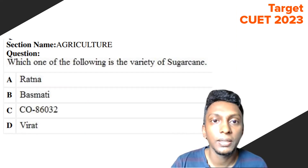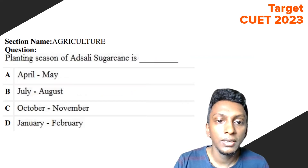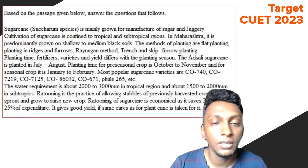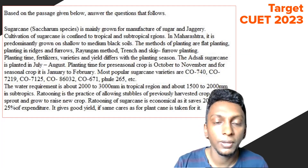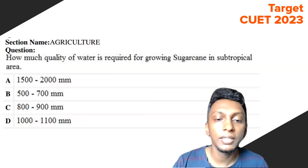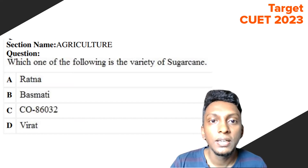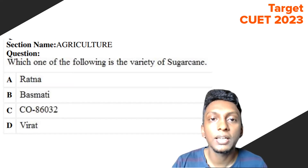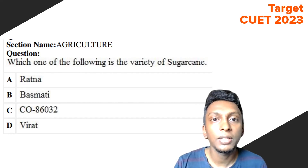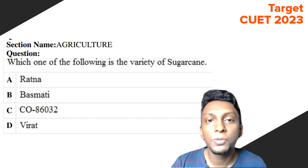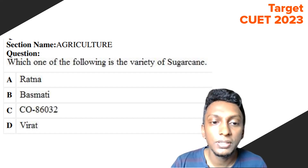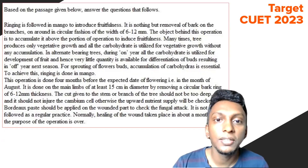Question 5: Which one of the following is NOT a variety of sugarcane? We can see there is a CO series: CO740, CO219, CO7125, CO86032, CO671, and CO265. Three options contain CO series varieties. Option C refers to a variety of rice, not sugarcane. So the answer is Option C — it is not a sugarcane variety.